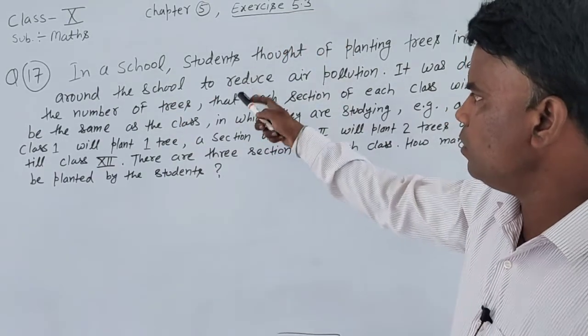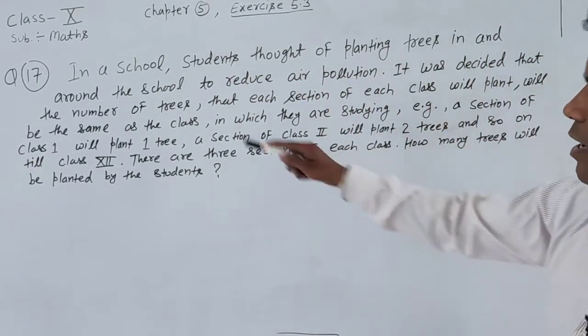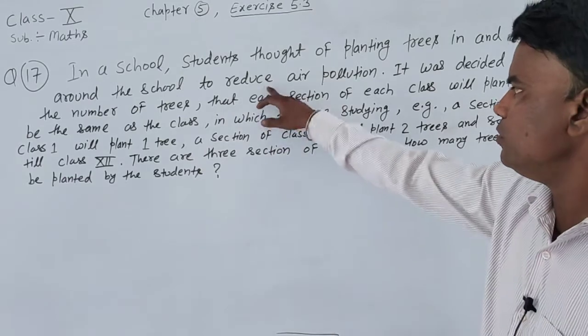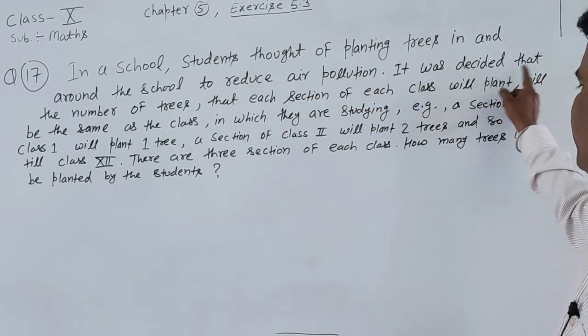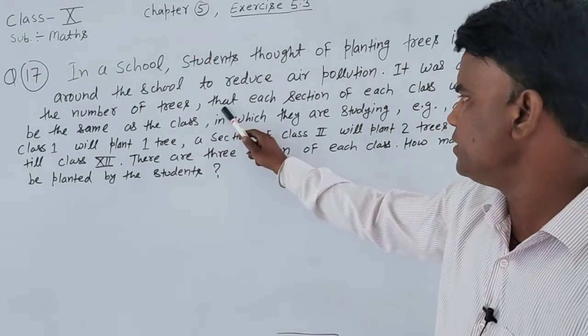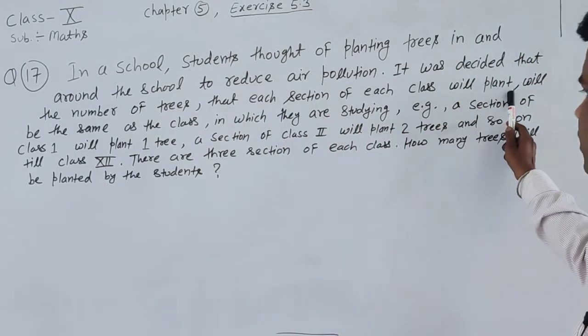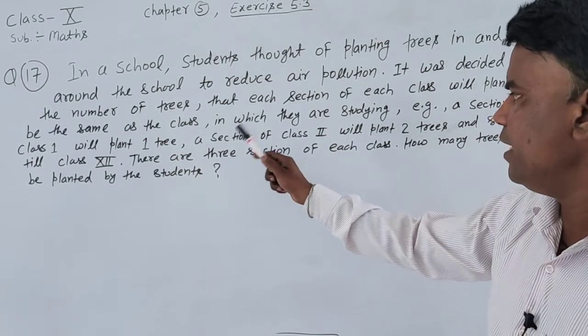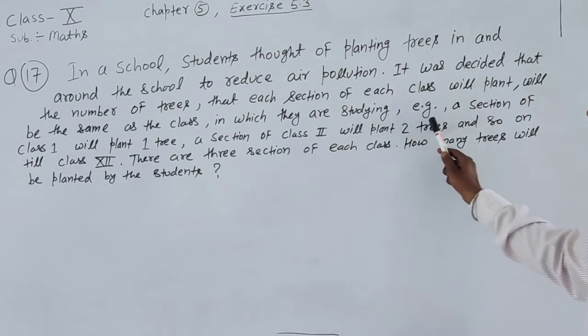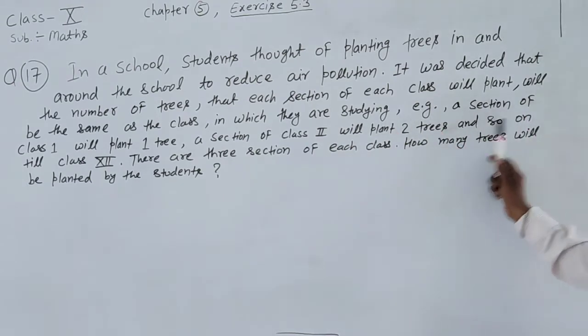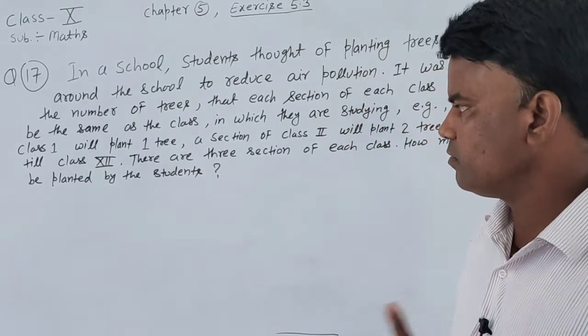In a school, students thought of planting trees in and around the school to reduce air pollution. It was decided that the number of trees that each section of each class will plant will be the same as the class in which they are studying. For example, a section of class 1 will plant one tree.